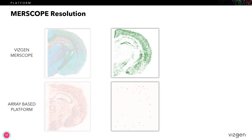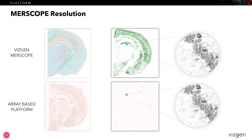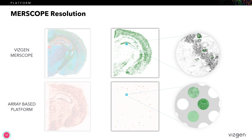When we zoom in with the MERScope platform, we can clearly see all the individual cells, including those cells expressing the gene shown here in green. However, when we use the array-based platform and zoom in — assuming something was detected — you would see something like this: 55 micron spots where you only see the average expression within each spot.